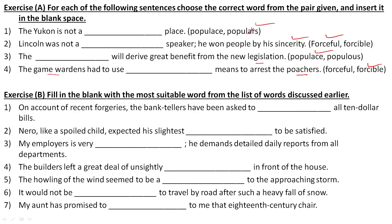Next exercise: fill in the blank with the most suitable word from the list discussed. On account of recent forgeries, the bank tellers have been asked to dash all the $10 bills. Forgery means making false signatures to withdraw money from the bank. So the bank tellers have been asked to 'scrutinize' the $10 bills carefully.